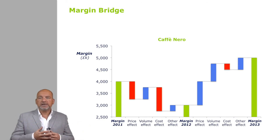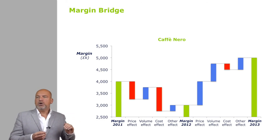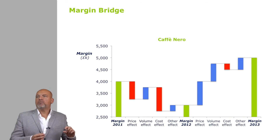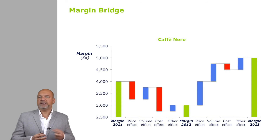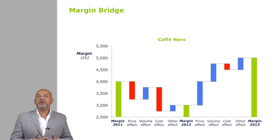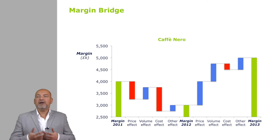Others can also include acquisitions, disposals, and so on. From one year to the next, you can see in this particular example that the difference in margin is mostly explained by much lower prices and much higher costs, even though volume has helped pick that up again. In the second year, we're doing better — great increases in both price and volume.